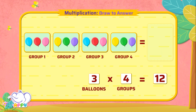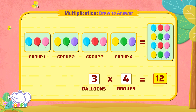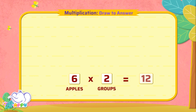Let's draw 12 balloons in the answer box. That's correct! Draw apples to show 6 times 2 equals 12.